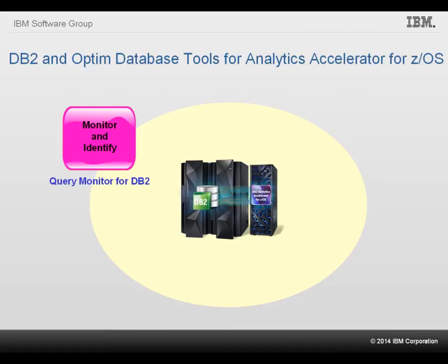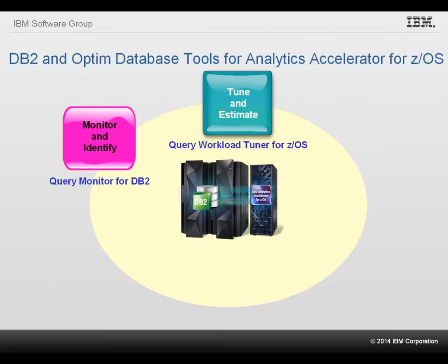DB2 Query Monitor for ZOS provides capabilities to monitor, identify, and segregate accelerated and non-accelerated queries. This tool can be used to measure and compare performance for the same queries, with and without acceleration. Version 4101 of IBM Infosphere Optum Query Workload Tuner for DB2 for ZOS, or OQWT for short, is an extension to the IBM Data Studio and offers expert tuning advice for query workloads across DB2 for ZOS environments, including advanced expert advice for accelerating queries.